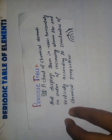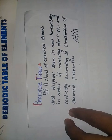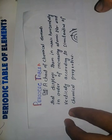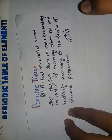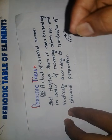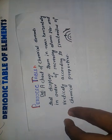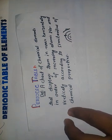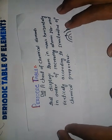In rows, the atomic number increases. In a period table, there are chemical properties similar to other chemical properties.